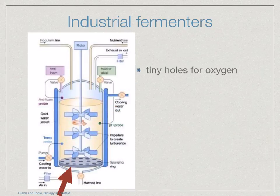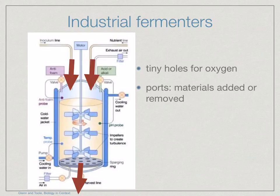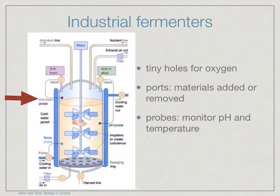If oxygen is needed, it can be forced through tiny holes in a plate at the bottom of the tank. There are a series of ports that allow materials to be added or removed at suitable stages of the process. Probes are used to monitor conditions such as temperature and pH, which can be adjusted to bring them back to the optimum if necessary.